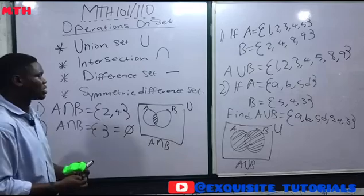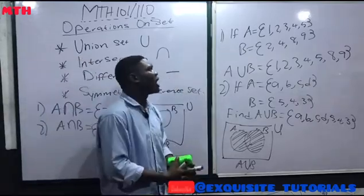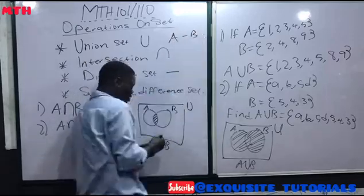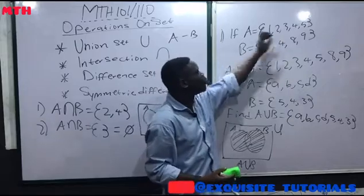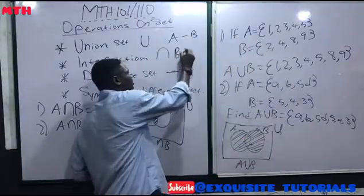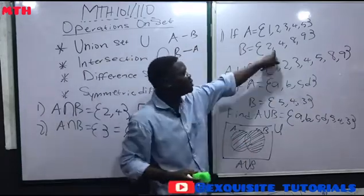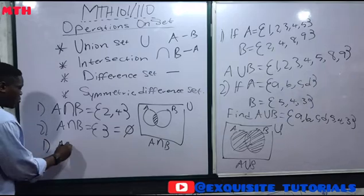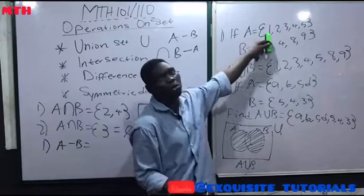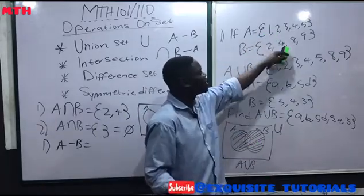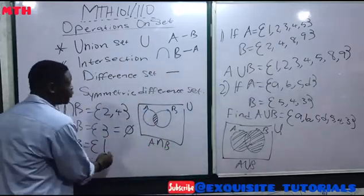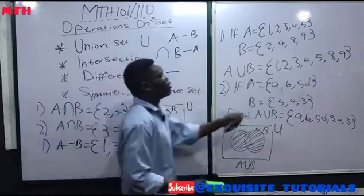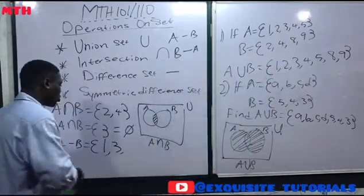Now let's talk about the difference set. The difference of two sets A and B are those elements that are in A but not in B. When we say A minus B, we look for elements in A that are not in B. For example, with A = {1, 2, 3, 4, 5} and B = {2, 4, 8, 9}: 1 is in A but not in B, 3 is in A but not in B, 5 is in A but not in B. So A − B = {1, 3, 5}.